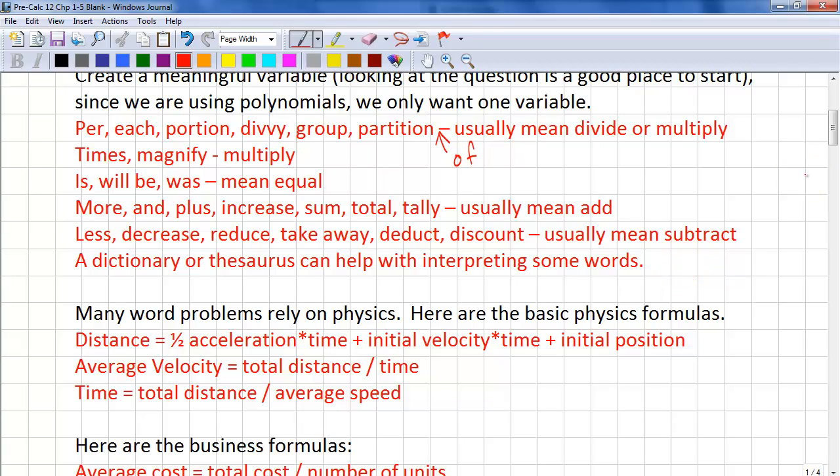Many word problems rely on physics. So here are some basic physics formulas. Distance equals 1/2 acceleration times time squared plus initial velocity times time plus initial position. Average velocity equals total distance divided by time. Time equals total distance divided by average speed.